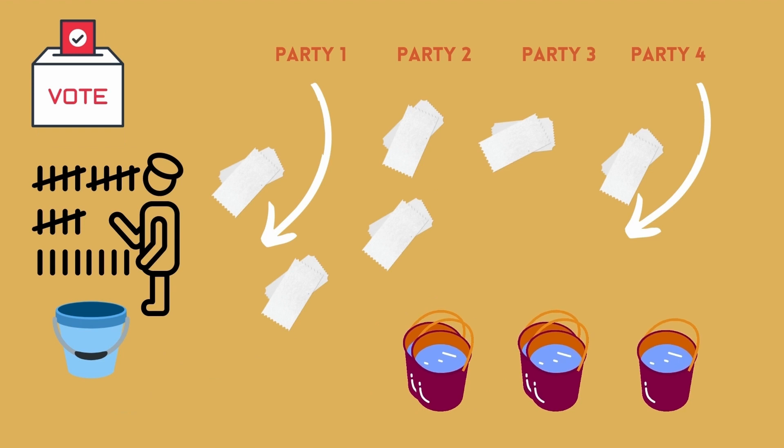This counting process continues until no single party or candidate has enough number one votes to fill a quota. This is where the order in which you numbered your boxes becomes important once again. Just like before, the party or candidate with the least number of number one votes is eliminated and their votes are distributed to whomever the voter numbered number two on their ballot paper.